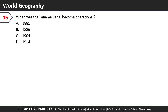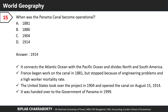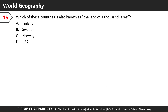When was the Panama Canal operational? The answer is 1914. The Panama Canal connects the Atlantic Ocean with the Pacific Ocean and divides North and South America. France began work on the canal in 1881 but stopped due to engineering problems and a high worker mortality rate. The United States took over the project in 1904 and completed it by 1914, inaugurating it on August 15th, 1914. It was handed over to the local government in 1999.